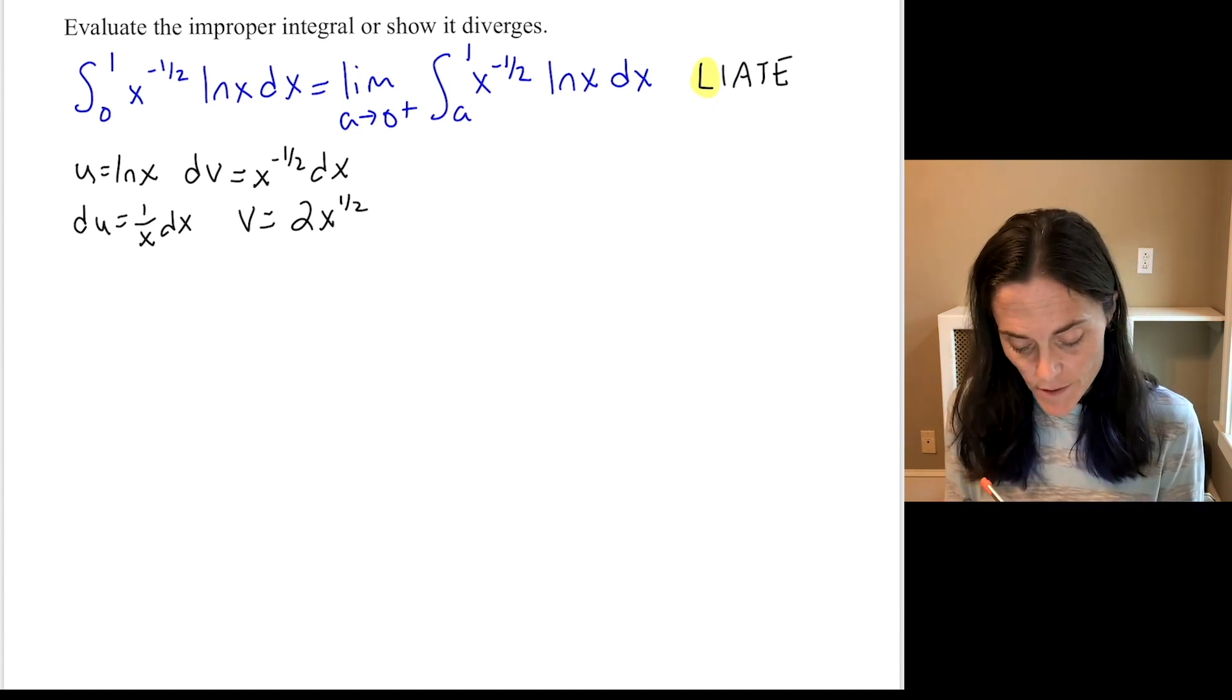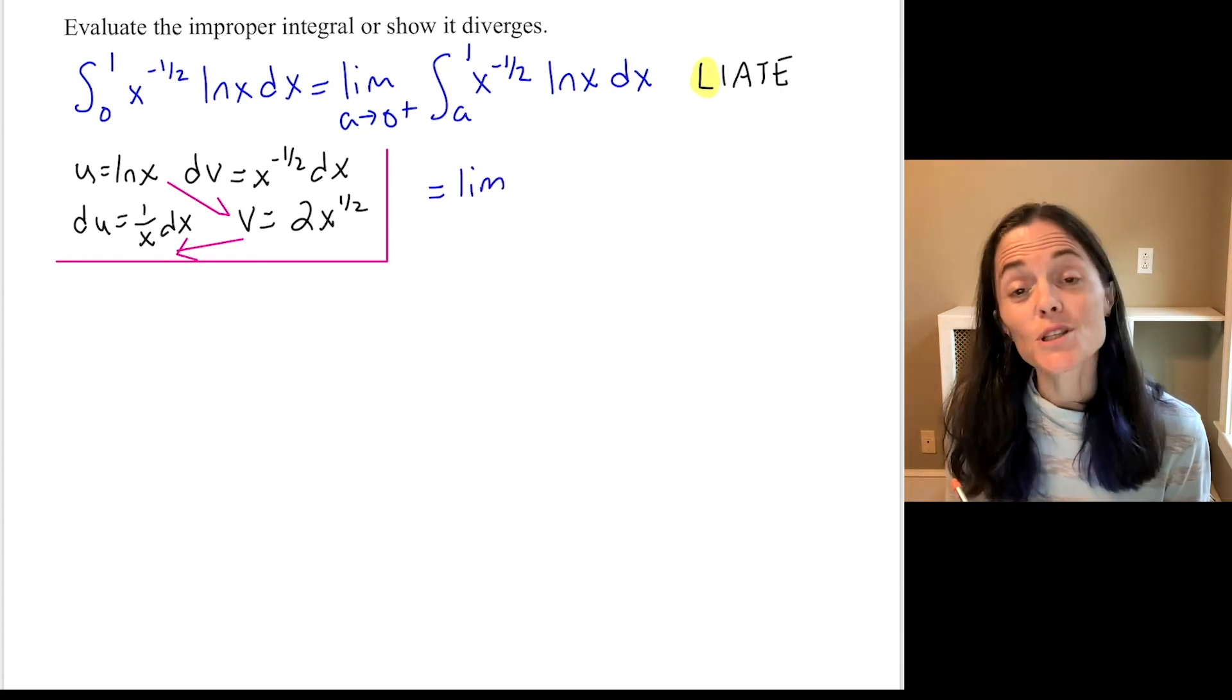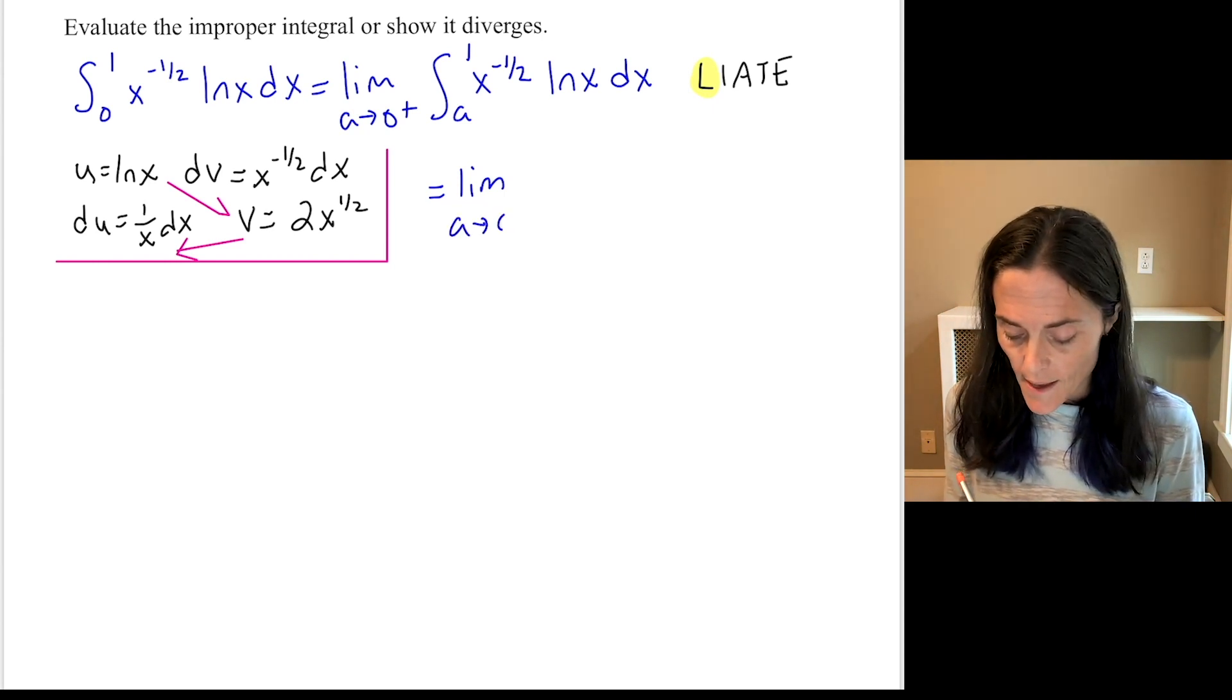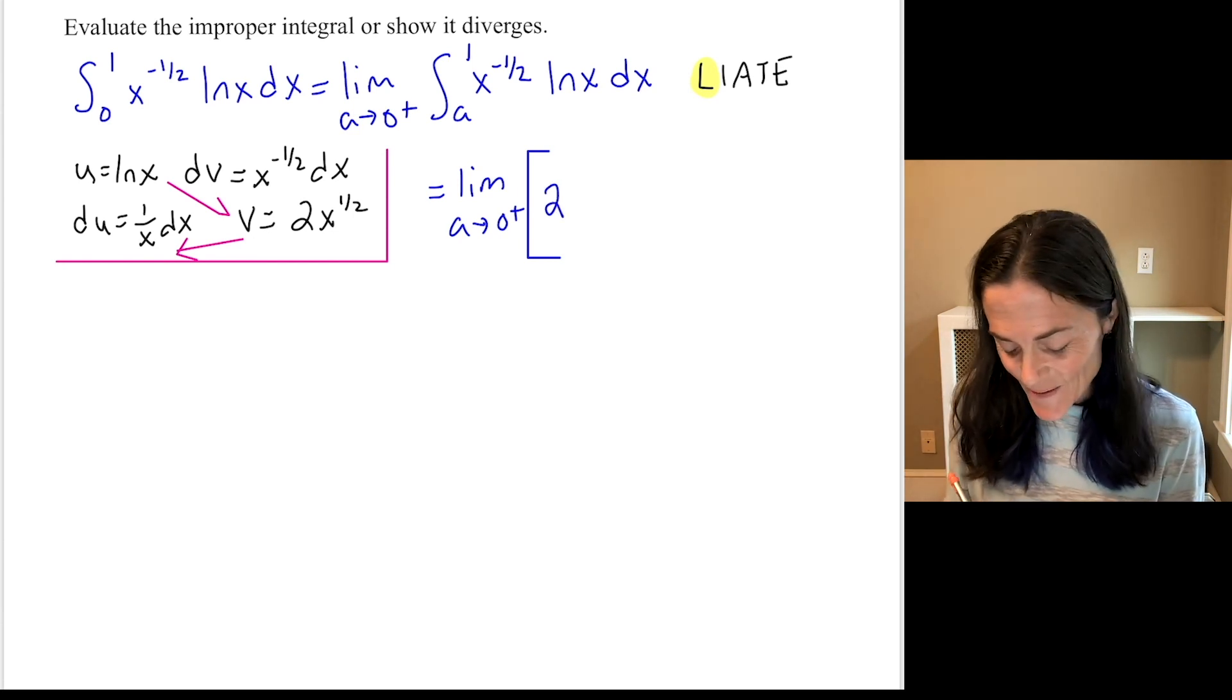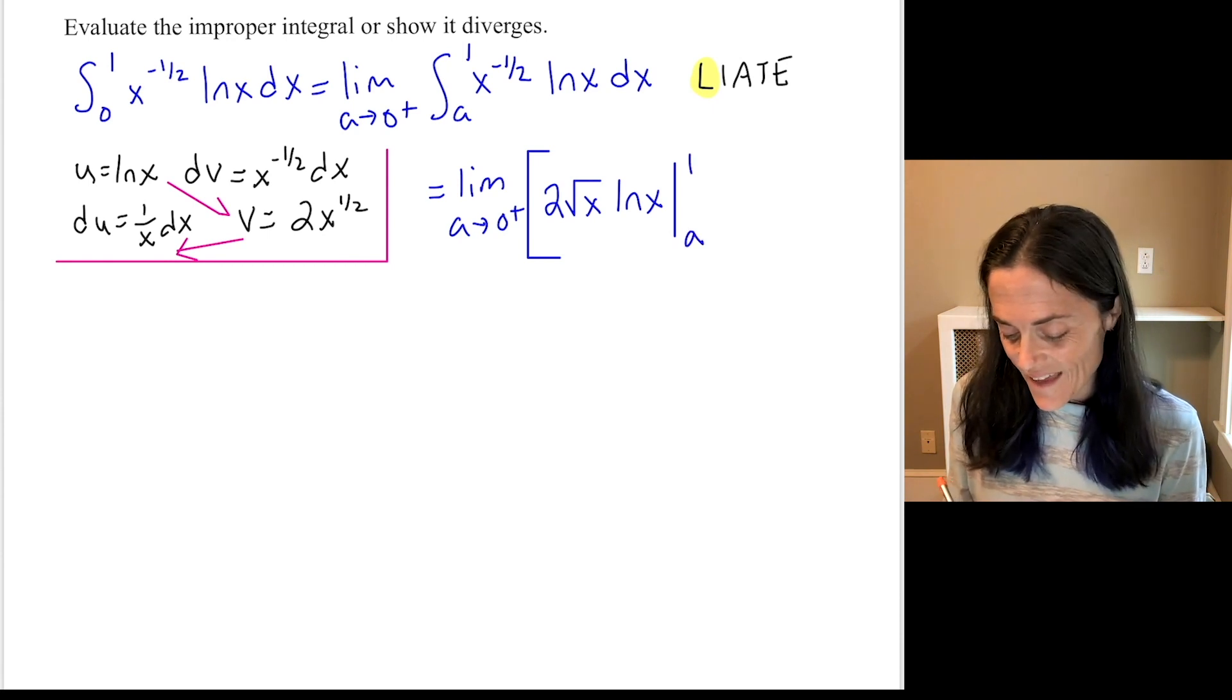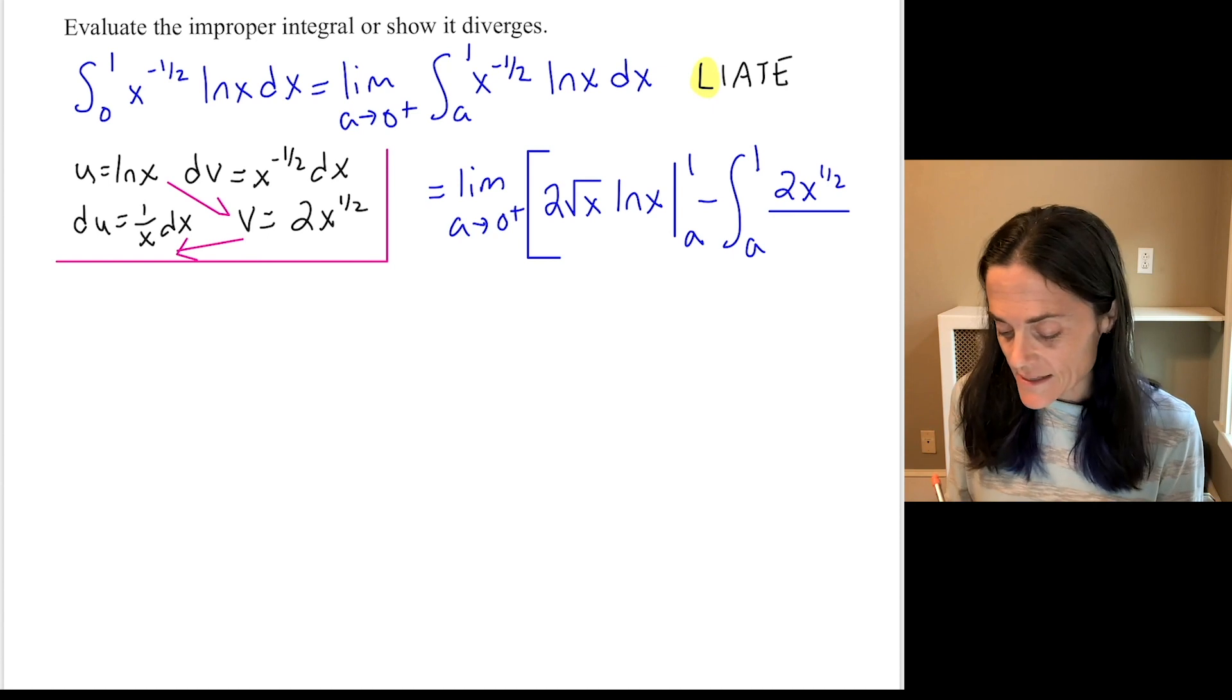Integration by parts goes uv minus the integral of vdu. And I typically will put a box like this. So I am first doing the definite integral. And then at the very end, I will evaluate this limit as a approaches 0 on the right. Well we have, this is 2 square root x ln x, 2 square root x ln x. And then evaluate it between a and 1 minus the integral from a to 1 of, this will be 2x to the 1 half divided by x dx.